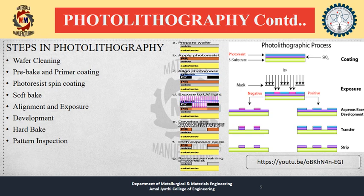Wafers that have been in storage must be chemically cleaned to remove contamination. A liquid or gaseous adhesion promoter such as trimethylsilylamine (HMDS) is applied to promote adhesion of the photoresist to the wafer. The surface layer of silicon dioxide on the wafer reacts with HMDS to form trimethylated silicon dioxide, a highly water-repellent layer. This water-repellent layer prevents developers from penetrating between the photoresist layer and wafer surface, preventing so-called lifting of small photoresist structures.